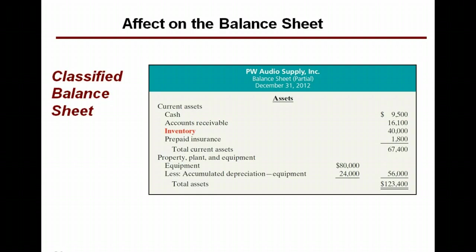Sometimes the operating cycle is longer than a year because things can get stuck in inventory for a while — not necessarily for a bad reason, but because it takes a long time to process. For example, tobacco takes about seven years to properly ripen, a good whiskey takes 20 years, building a ship takes two years, and building a freeway can vary considerably depending on the project.